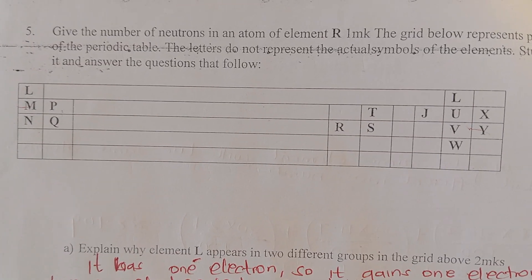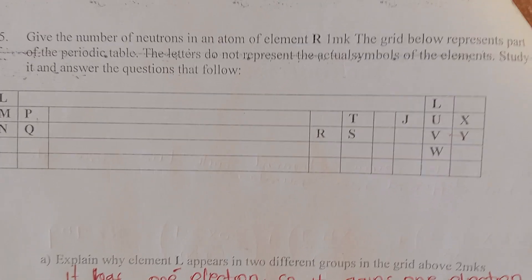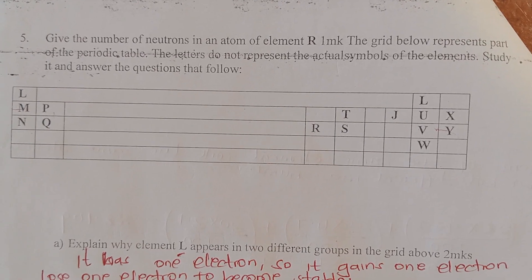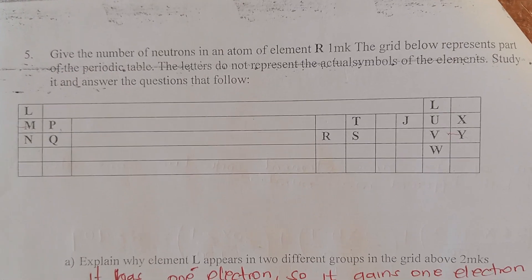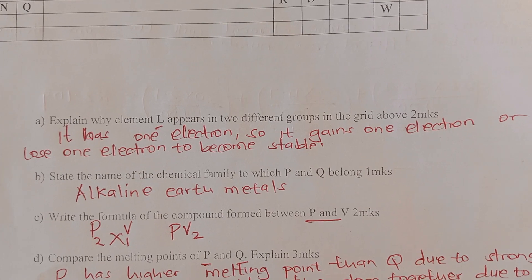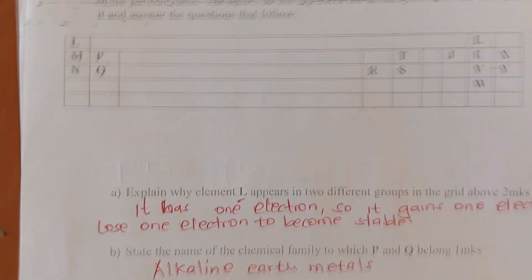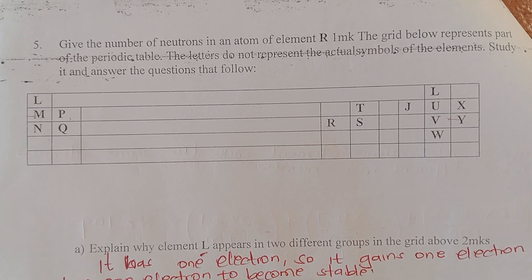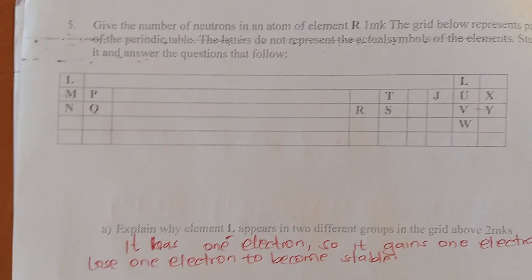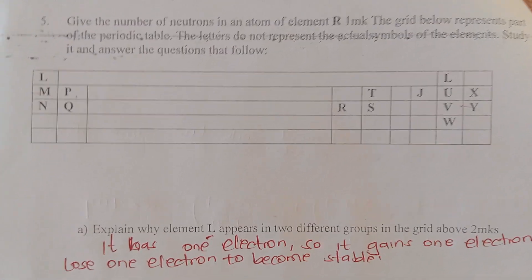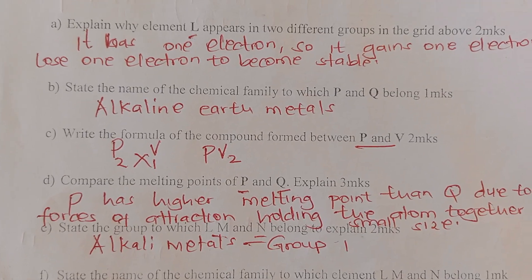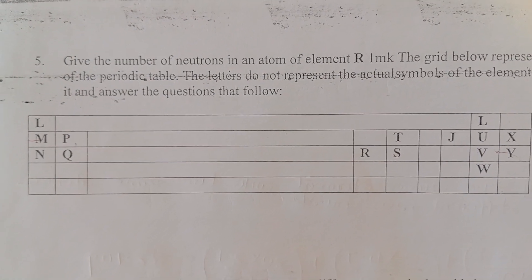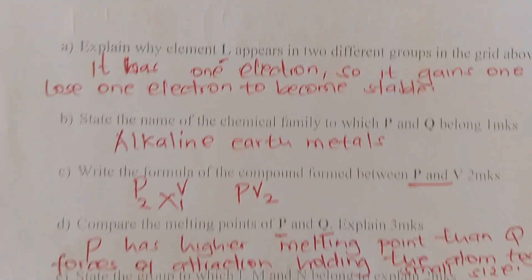Give the number of protons and neutrons in an atom of element R. The grid below represents part of the periodic table — the letters do not represent the actual symbols of elements. Element R appears in two different groups because it has one electron in its outermost energy level, meaning it can gain one or lose one electron to become stable. Elements P and Q are in the second group of the periodic table, so they are alkaline earth metals.